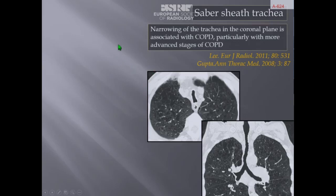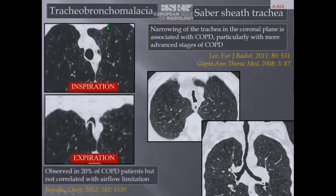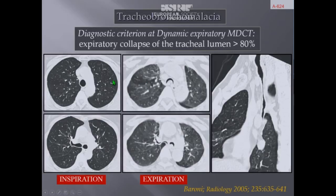Tracheal abnormalities include the saber-sheath trachea, a deformity characterized by narrowing of the trachea in the coronal plane involving only the intrathoracic trachea while sparing the cervical part, associated with more advanced stages of disease. Conversely, tracheomalacia is observed in 20% of COPD patients and is not correlated with airflow limitation. It is characterized by exaggerated collapse of the tracheal lumen at forced expiration with anterior bowel displacement of the posterior wall, and the best technique to assess it is dynamic expiratory MDCT.